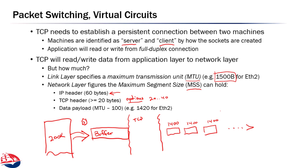TCP reads 1400 bytes from the buffer, turns them into a packet, and sends them down the wire, then reads another 1400 bytes and sends those. As the TCP layer reads from the buffer, the web server can keep writing more data into it. Eventually we chip away at the 200k — turning it into however many packets 200k divided by 1400 bytes is — and ship them off to the web browser.